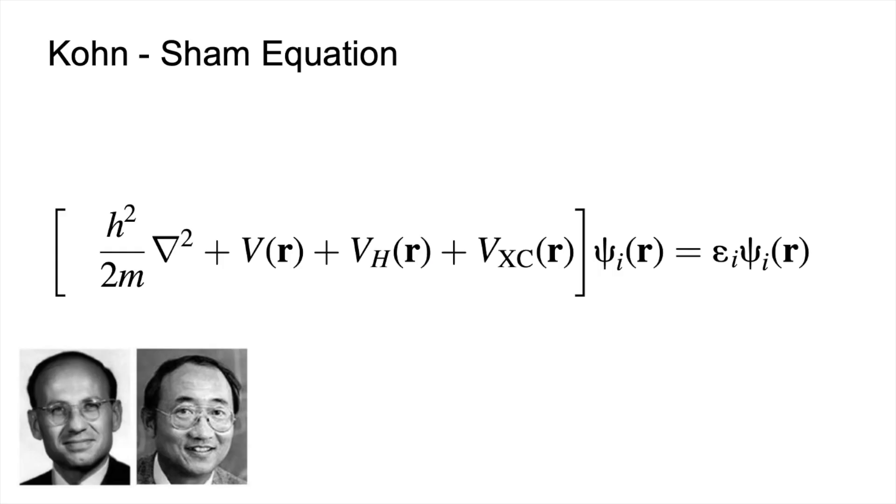This looks a lot like the Schrödinger equation that we saw earlier. The difference is we consider each electron i independently given the overall electron density. The psi i's are wave functions for a single electron, which are typically referred to as orbitals, and e is the energy.